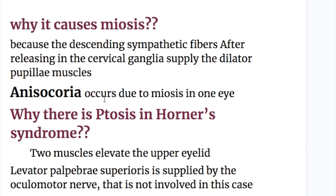Miosis occurs because the descending sympathetic fibers, after relaying in the cervical ganglia, supply the dilator pupillary muscle. Interruption of these fibers causes pupillary constriction. Miosis leads to anisocoria — unequal pupils in the two eyes — because the affected eye's pupil is constricted, whereas the other pupil is normal.